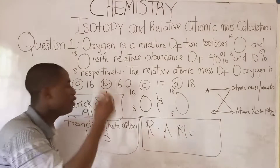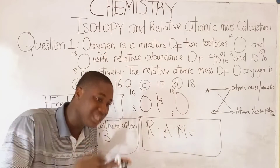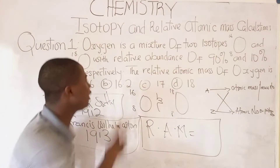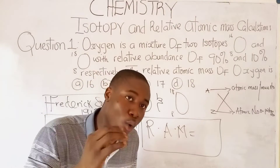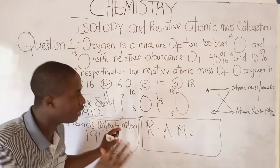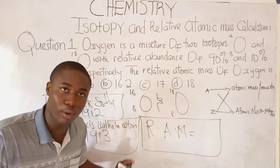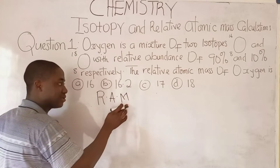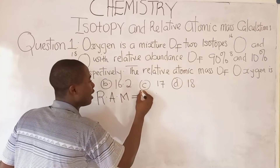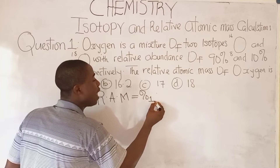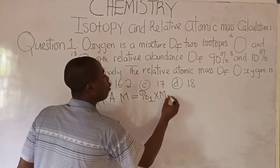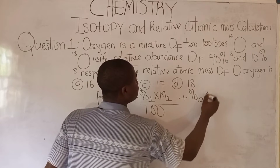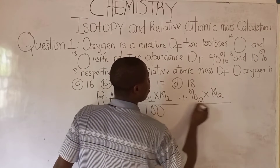I will bring the formula now so we can apply it to solve this question on the board. In solving questions on relative atomic mass, the formula is: percentage 1 times mass number 1 over 100, plus percentage 2 times mass number 2 over 100.